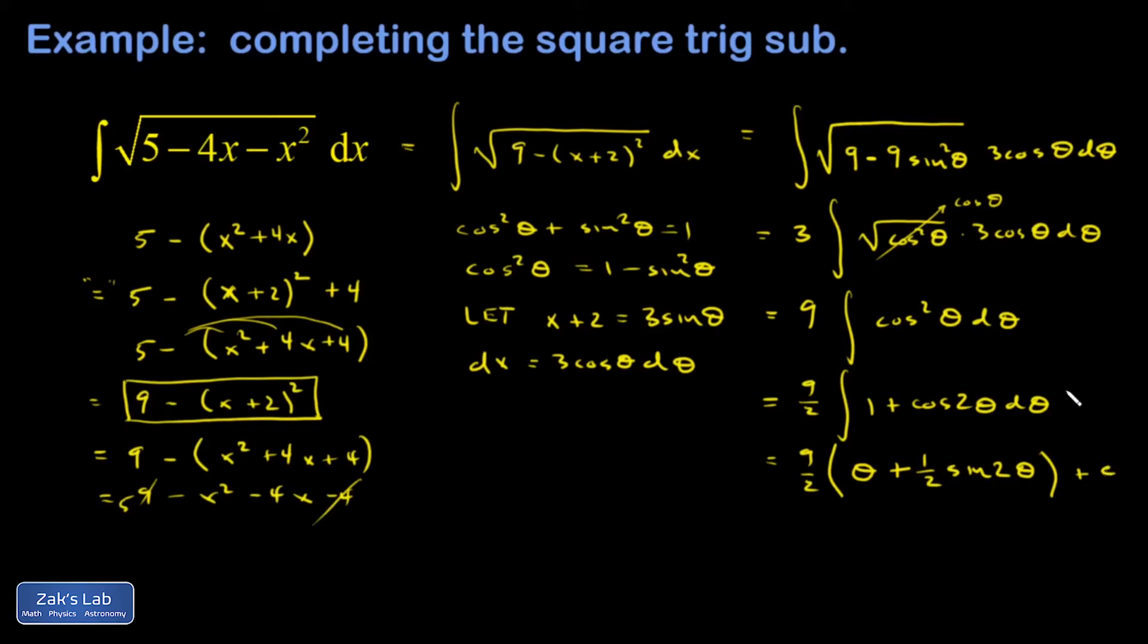Now I've got to transform back to the variable x. I need to back here where I made my substitution and solve for θ. So (x + 2)/3 = sin(θ), which means θ = arcsin((x + 2)/3). That's not so bad on this first term.